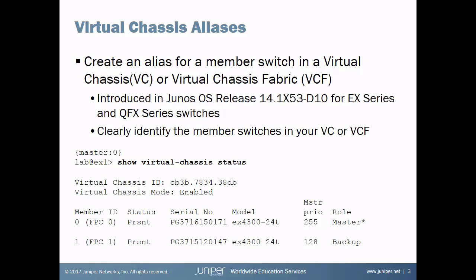Let's start by examining what Virtual Chassis Aliases are. Juniper's EX Series and QFX Series switches can be combined to establish a Virtual Chassis or a Virtual Chassis Fabric that allows individual member switches to be managed as a single device. In Junos 14.1, a new configuration option was added that allows administrators to assign user-friendly names to individual member switches. The operational command Show Virtual Chassis Status lists each member switch, identified by member ID values and serial numbers.